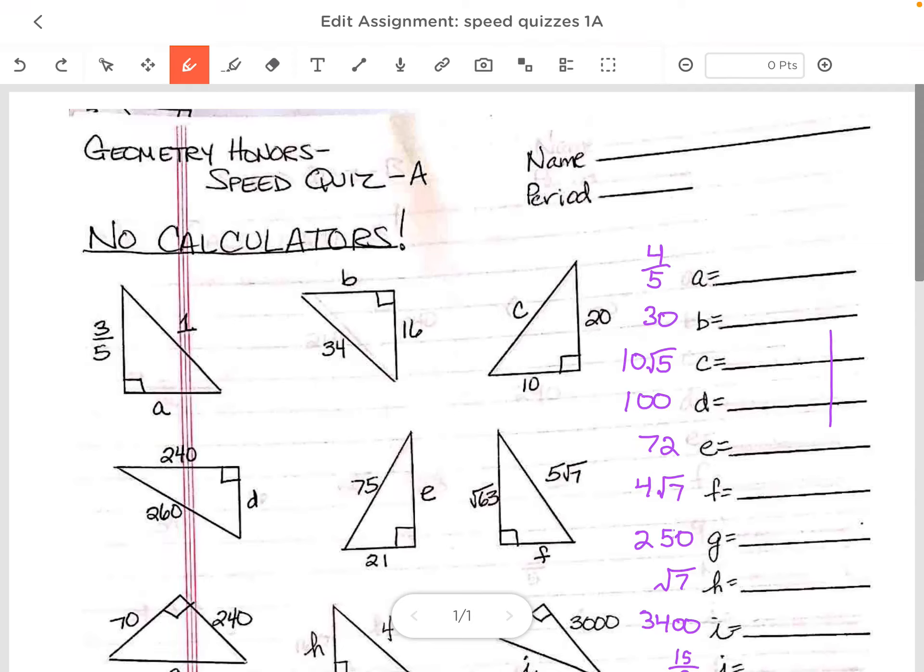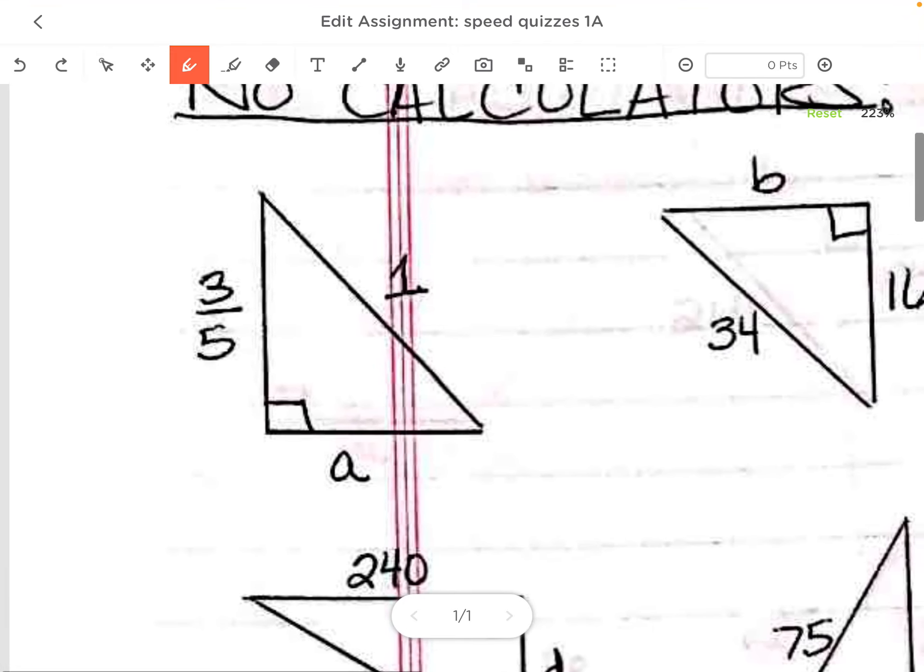Okay guys, so I'm going to practice a speed quiz with you guys, talk about how I would go about this speed quiz. So the first thing I see is a fraction. I would try getting rid of the fraction, so I would multiply this entire triangle, all of the sides by 5.